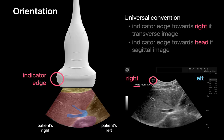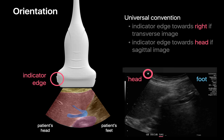Therefore, it's a universal convention when ultrasounding patients that the indicator edge always points towards the patient's right side for transverse images, and that the indicator edge always points towards the patient's head for sagittal images.